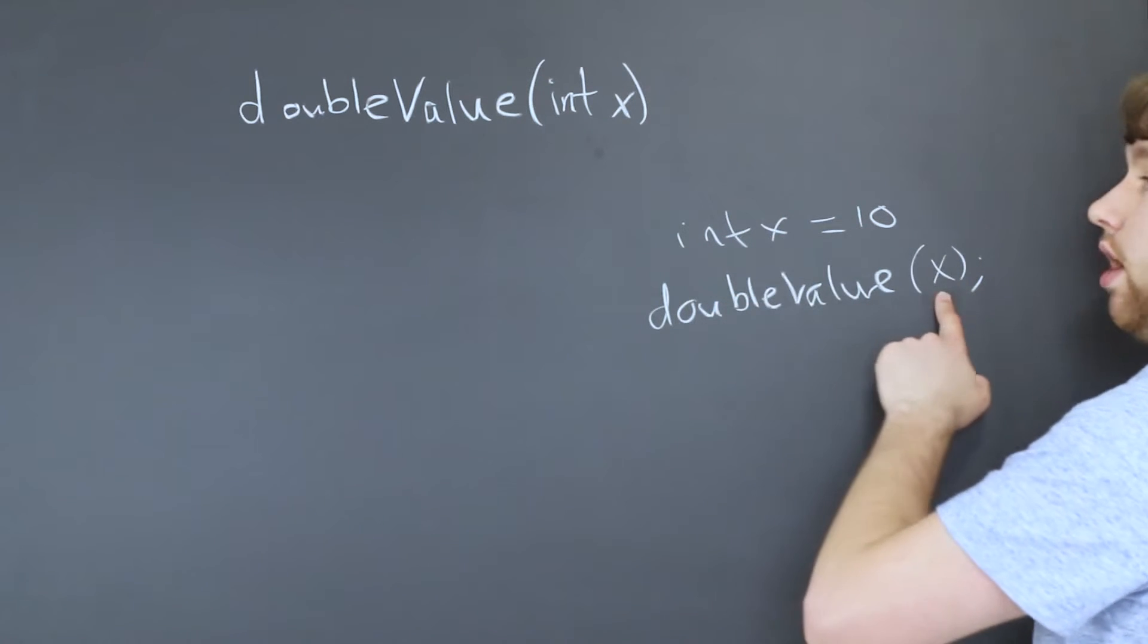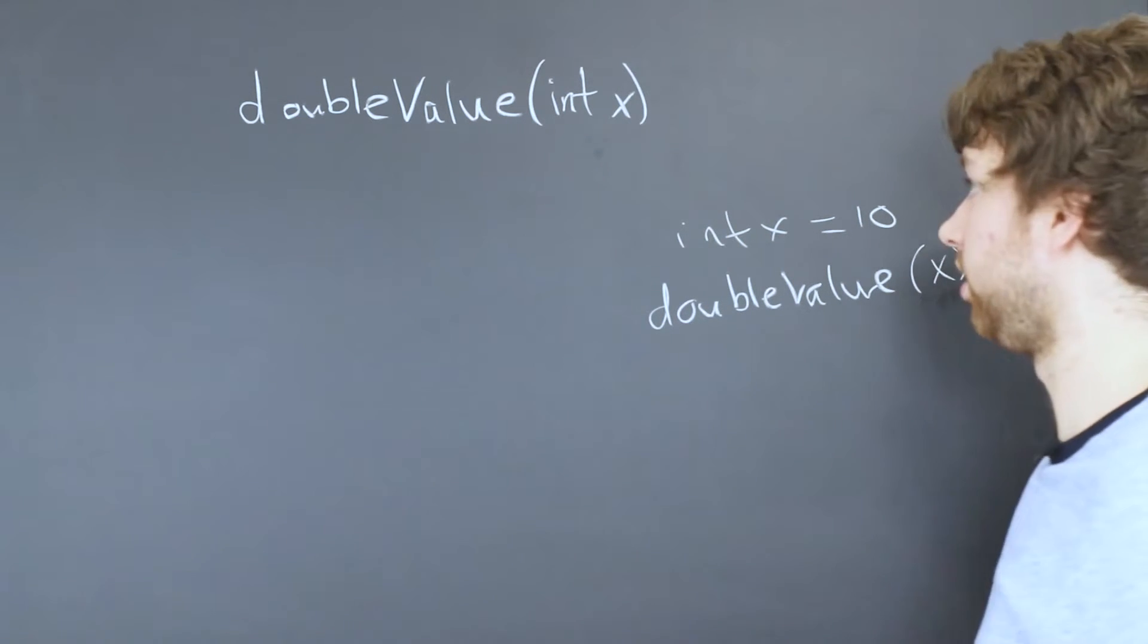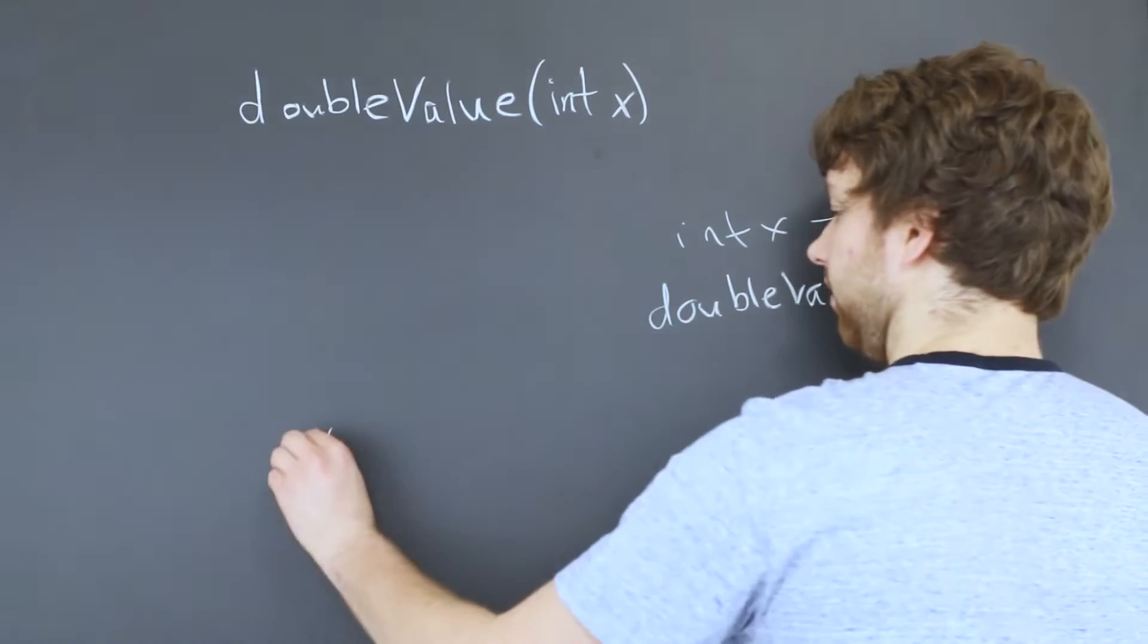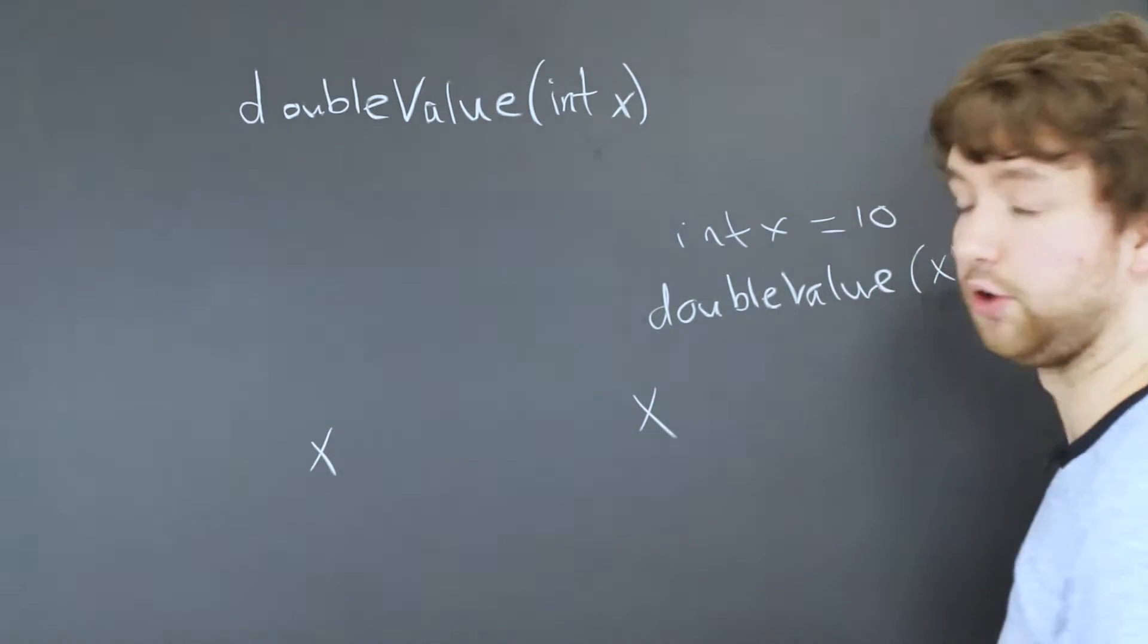So for example, I can name this one y and pass in y. It doesn't matter because they're two separate variables. What happens is we have an x local to this function and then we have the x in our main program.